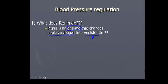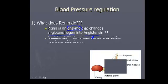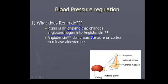Just like with blood clotting, we have a series of steps. What angiotensin does is stimulate the adrenal cortex to release aldosterone. The adrenal cortex is not in the brain — it's on top of the kidneys, a specific section of the adrenal gland.